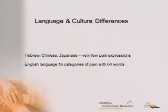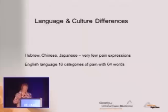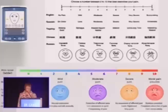Pain is influenced by both language and culture. Hebrew, Chinese, and Japanese have very few words that express pain. On the other hand, the English language has 16 different categories of pain with 64 different words. So it isn't the nerve fiber — everyone with a pain stimulus gets it to the gate mechanism and to the brain, but how it's interpreted varies. That mechanism explains why some patients respond differently or measure their levels differently.